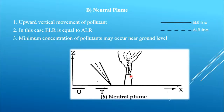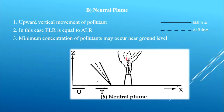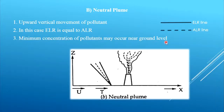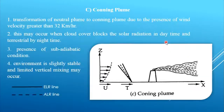The second plume is the neutral plume. Neutral plume occurs when ELR is more or less equal to ALR — the environmental lapse rate is equal to or slightly more or less than the adiabatic lapse rate. In that case the plume will rise directly in the upward direction, and due to this upward movement of the smoke or gases, minimum concentration of pollutants may occur near the ground surface.